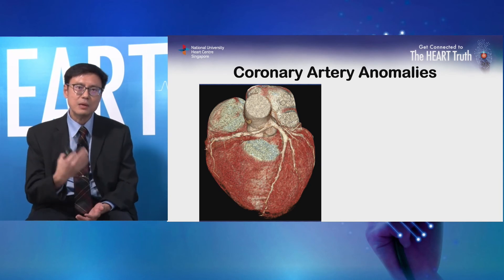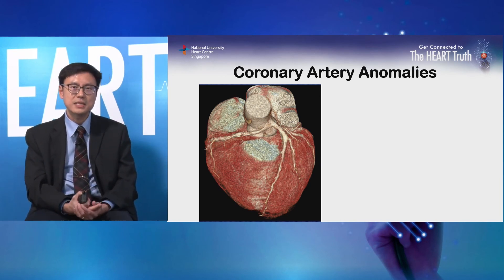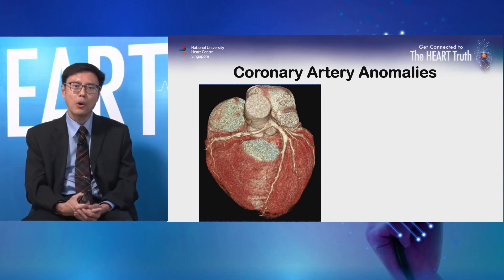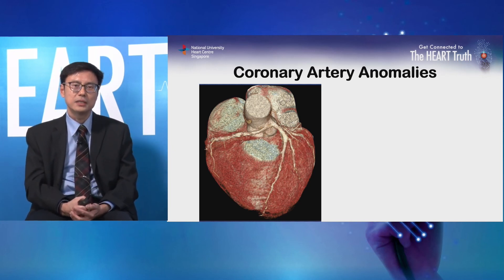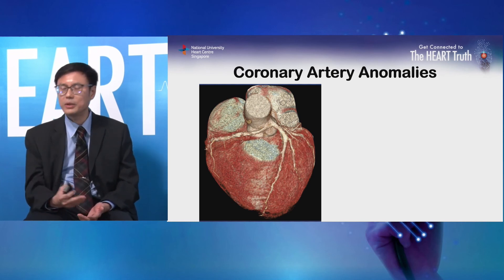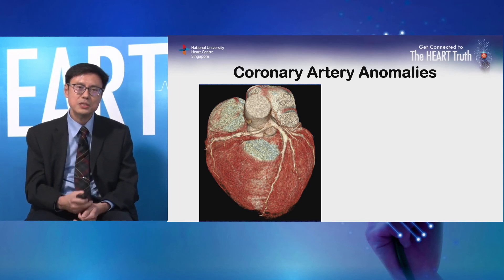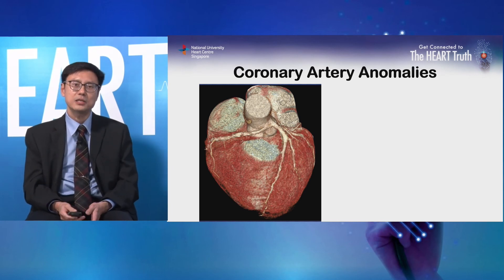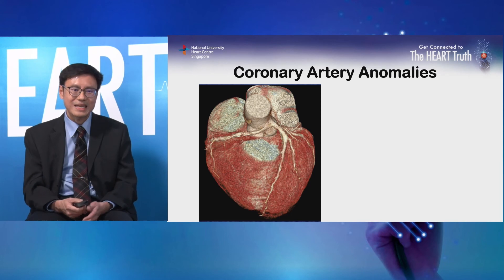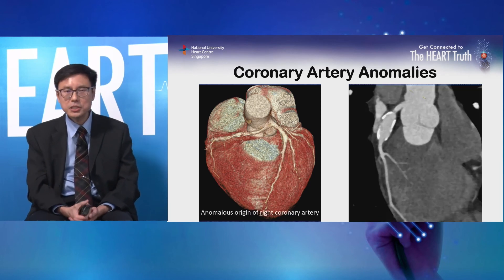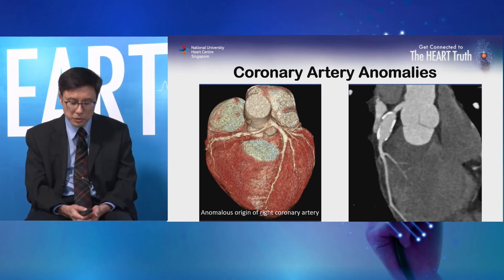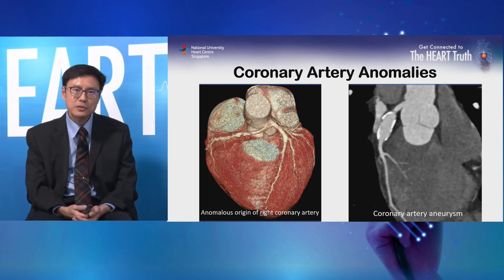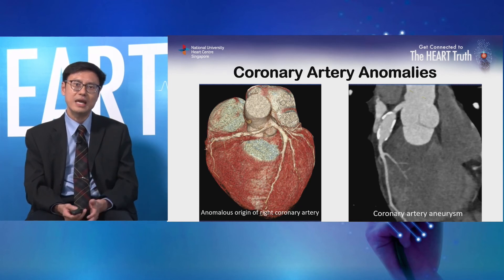Besides atherosclerosis, the CT scan can pick up other coronary artery abnormalities. Some patients are born with coronary arteries that originate from the wrong place — in this patient the right coronary artery comes out from the left side when it should come from the right. These patients can experience chest pain and heart attack, particularly during strenuous exercise. Here is a patient with abnormal dilatation of the artery called a coronary artery aneurysm, which can also cause heart attack and chest pain because blood can clot within the aneurysm.